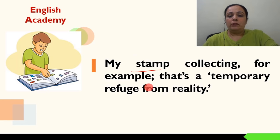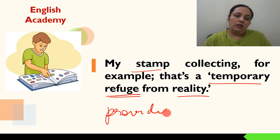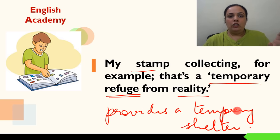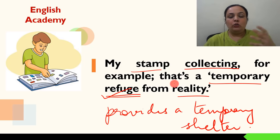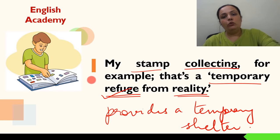My stamp collecting, for example — that's a temporary refuge from reality. Refuge means something that provides a temporary shelter. Jaise aap bahar jaate hain, baarish hone lagti hai, toh aap ek ped ke neeche khade ho jaate hain apne aap ko baarish se protect karne ke liye — so the tree is a temporary refuge for you. Similarly, yahaan par writer kehte hain ki woh stamps collect karte the, toh yeh jo unki hobby thi, woh bhi unki real life se ek temporary refuge tha, kyunki jab woh is hobby mein busy ho jaate the toh woh apni zindagi ki pareshaaniyon ko bhool jaate the.